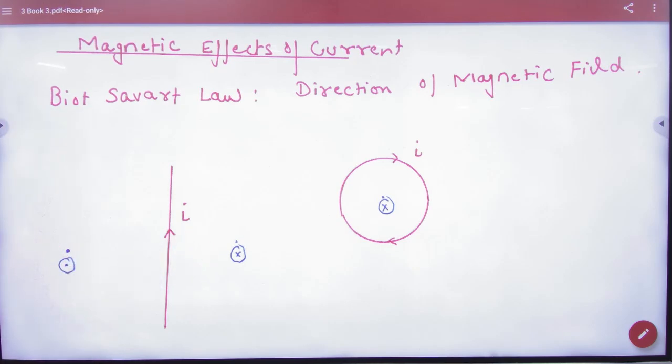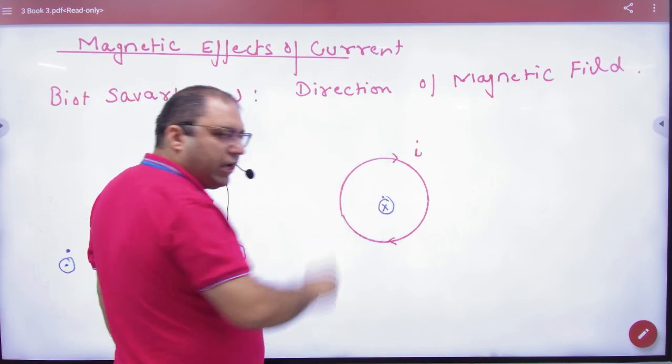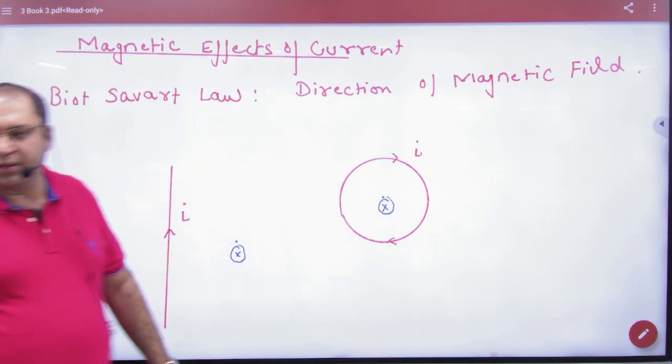Now use our right hand. Then if you think this is a loop, if current is running like this and you ask B vector here, then your fingers are running like this. How is the B vector on the board? Inside.